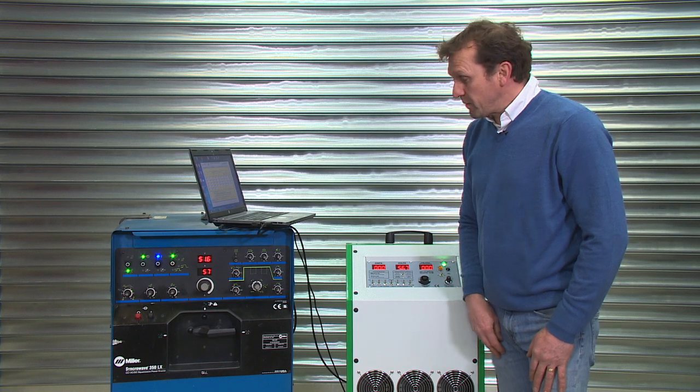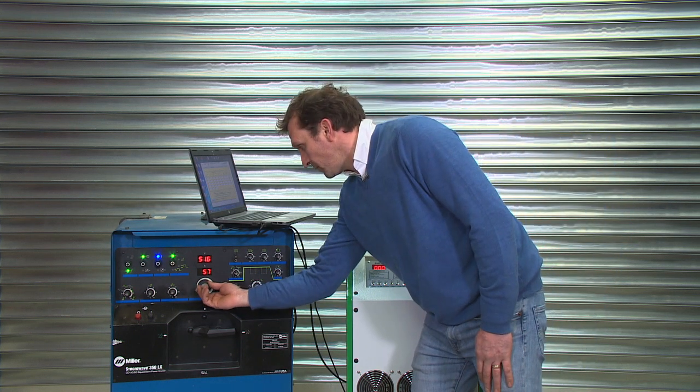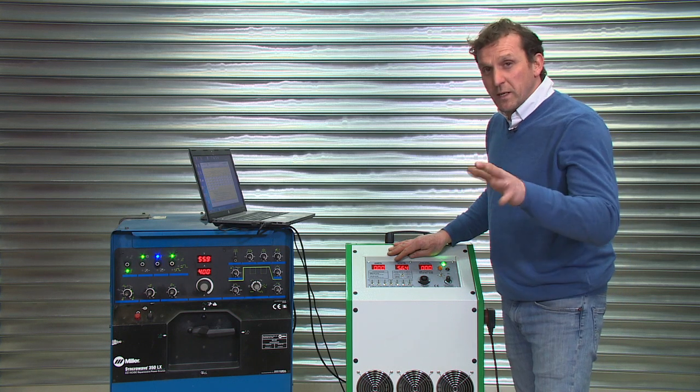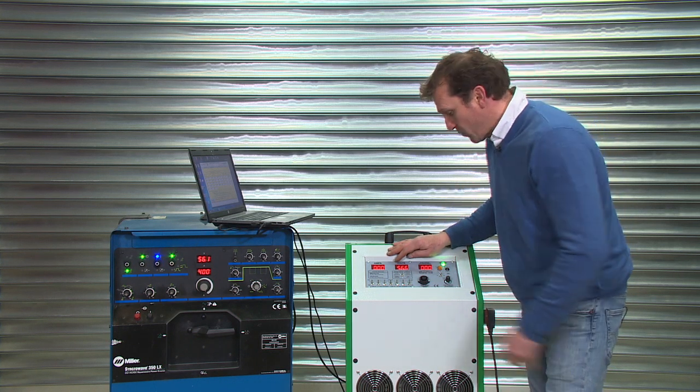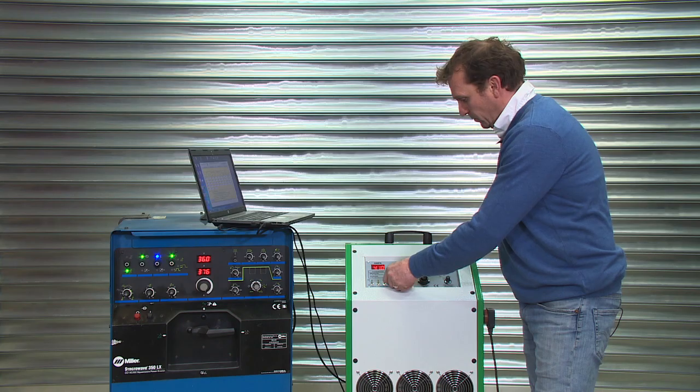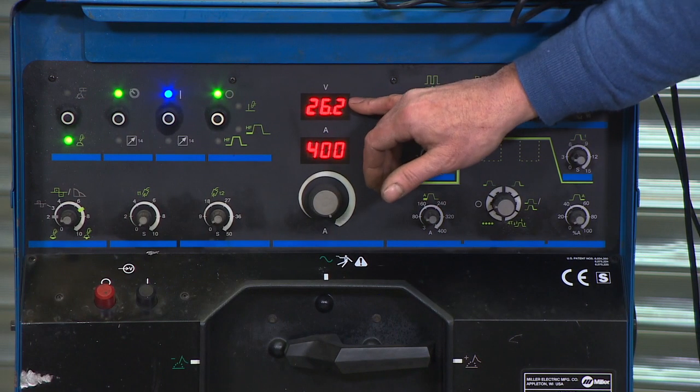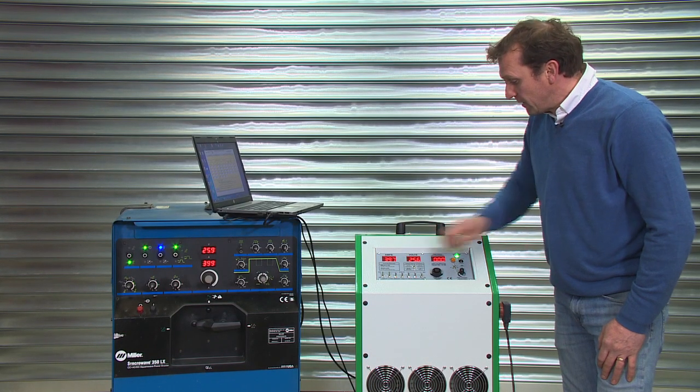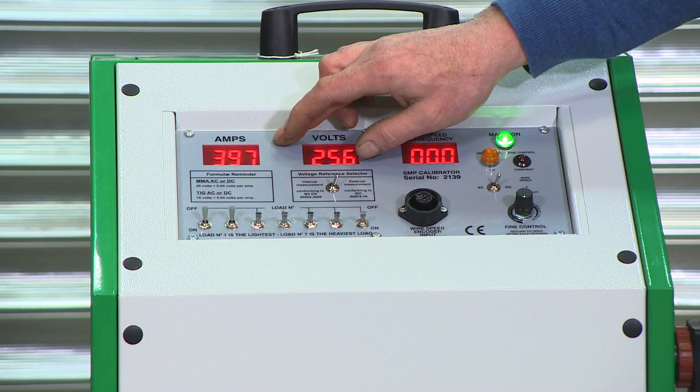Then our final reading, maximum 400 amps. Looking for the voltage of 26 volts within that 10% window. We record 400 amps, 26.2. And the calibrator reading of 397, 25.6.